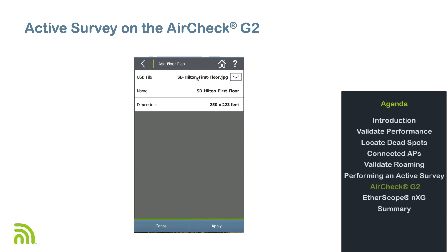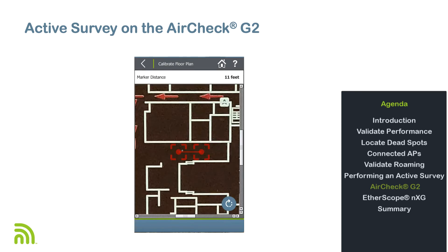If there is more than one floor plan, you can use the drop-down arrow to select the desired one. Once the floor plan has been selected, we need to calibrate it. This is accomplished by tapping on Dimensions. The floor plan will be displayed with two red dots connected by a line. Drag these two dots to a known location on the floor plan, ensuring the exact distance between these two locations is known.